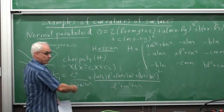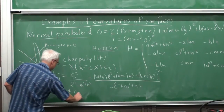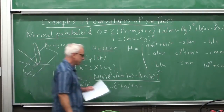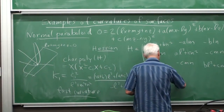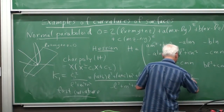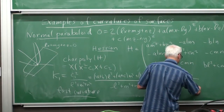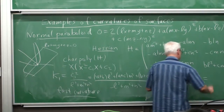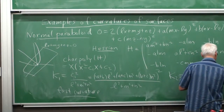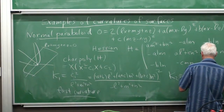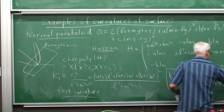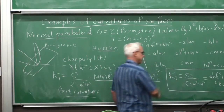That quantity is called the first curvature. The second curvature K₂ is defined to be c₂, the second coefficient of the characteristic polynomial, divided by l² + m² + n². That equals AB·l² + AC·m² + BC·n², all divided by l² + m² + n². This is generally the more important one — the Gaussian curvature, also called the second curvature.